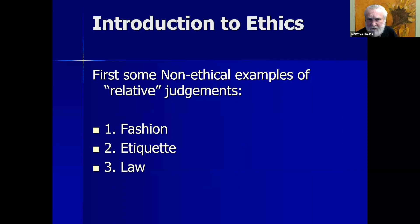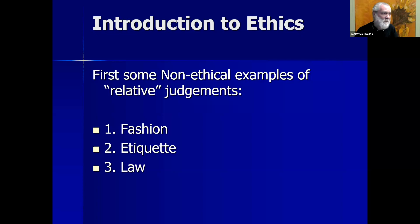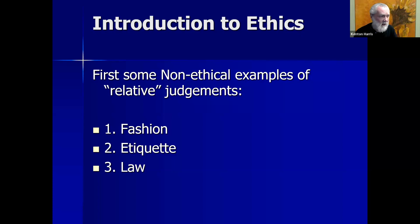Before talking about ethical relativism, I want to talk about some non-ethical examples of relative judgment systems you're already familiar with, which will make it easier to understand what the ethical relativist is claiming. Let's take fashion first. Say one day I show up to class wearing a polyester mint green leisure suit with a nylon fake silk shirt and lots of gold chains, and platform shoes. Is that fashionable? No, that would not be fashionable — that's just not what our current fashion is.